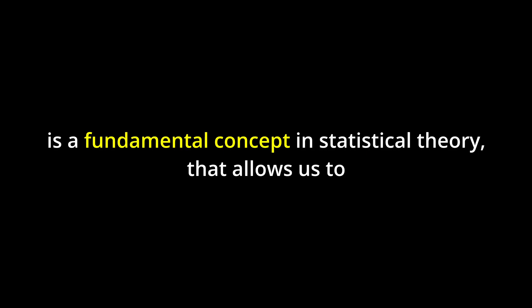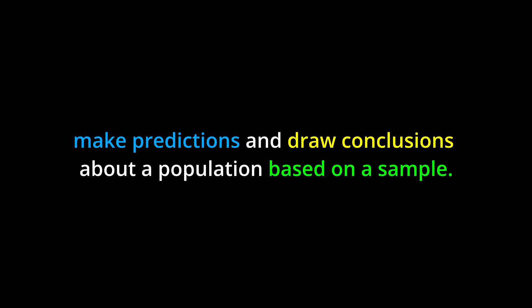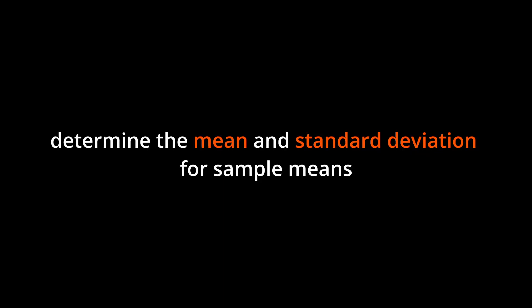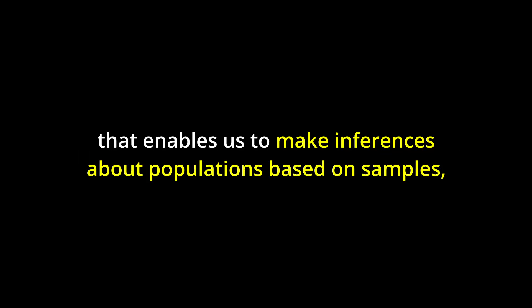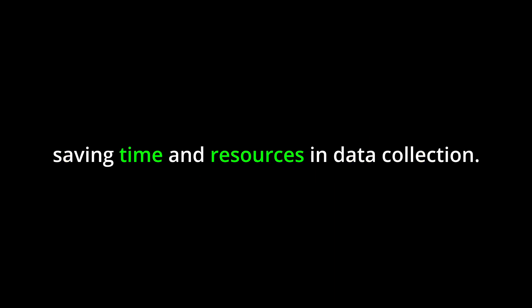Conclusion. The central limit theorem is a fundamental concept in statistical theory that allows us to make predictions and draw conclusions about a population based on a sample. By understanding the central limit theorem, you can calculate probabilities for sample means, determine the mean and standard deviation for sample means, and apply this knowledge to real-world scenarios. This chapter provides a solid foundation for understanding the behavior of data and making informed decisions based on statistical analysis. The central limit theorem is a powerful tool that enables us to make inferences about populations based on samples, saving time and resources in data collection.